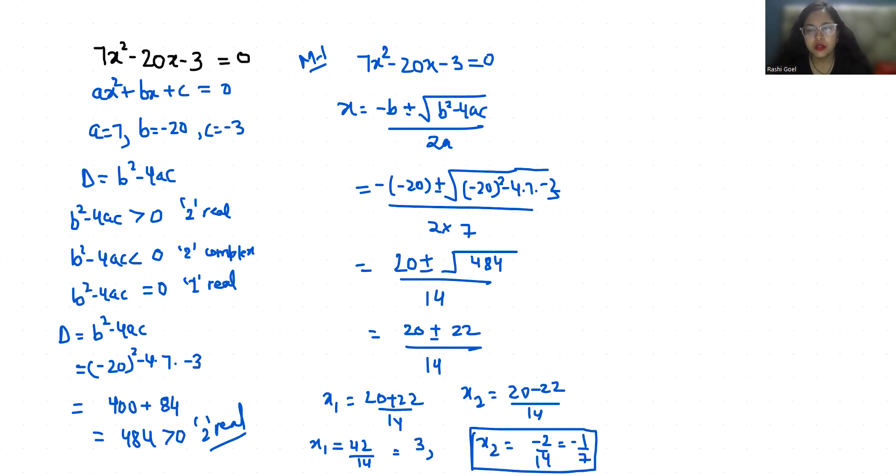Now method two: 7x square minus 20x minus 3 equals 0. I am going to use the middle term split method. So write minus 20x as minus 21x plus x minus 3 equals 0.